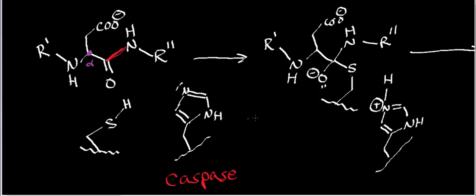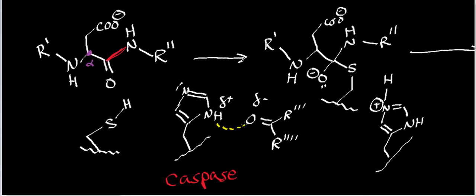One other thing we have to keep in mind — and I haven't drawn it here just for the sake of space — is that there's a carbonyl of the peptide backbone that has a partial negative charge on the carbonyl oxygen, and there's a partial positive on the proton that's on the histidine. There is an electrostatic interaction between the partial negative and the partial positive, and that electrostatic hydrogen bonding helps hold the histidine residue in the proper orientation so it can deprotonate the cysteine residue.